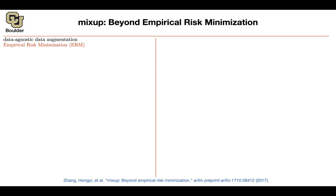At the same time, you're going to hear the word empirical risk minimization a lot. It's just a fancy word for what we have been doing so far in the course — loss functions. But where does the name come from? Why empirical? What is risk? Minimization should be clear — in machine learning, you like to minimize.